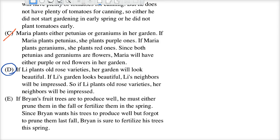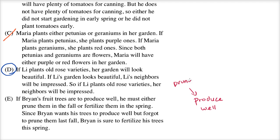Just for good measure, let's look at choice E. It says: if Brian's fruit trees are to produce well, he must either prune them in the fall or fertilize them in the spring. If you want to produce well, he must either prune or fertilize. Even in how the logical structure is being set up, before we even try to make a conclusion, this already has a different shape. So I would rule this out pretty quickly.